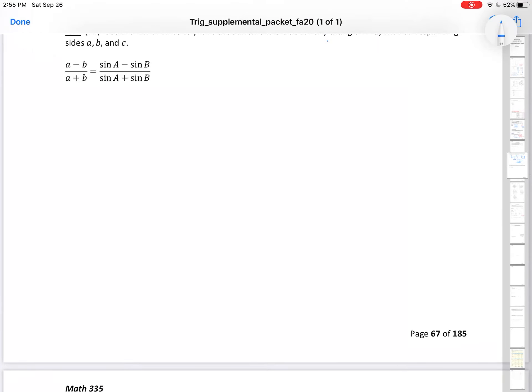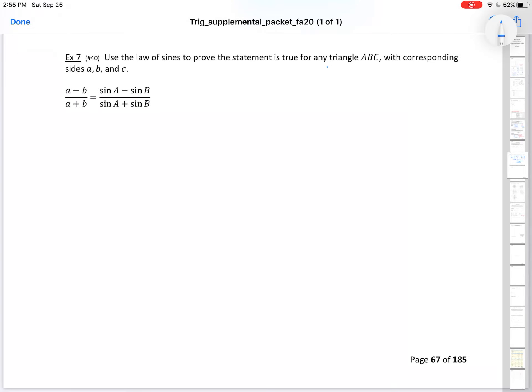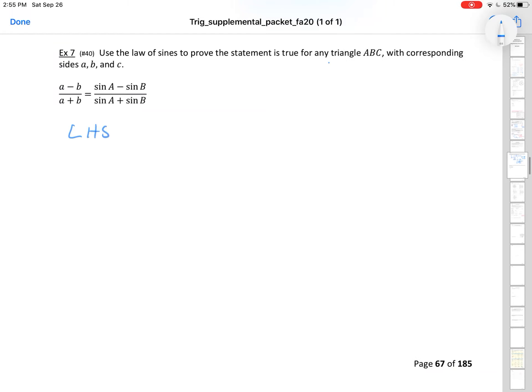Use the law of sines to prove that the statement is true for any triangle ABC with corresponding sides A, B, and C. So this is in here. Proofs are something that's going to happen. You just got to get a comfort level for them. But let's take a look. They're saying use the law of sines to prove the statement is true for any triangle. So what I'm going to do is start on the left hand side and we're going to show the right hand side.